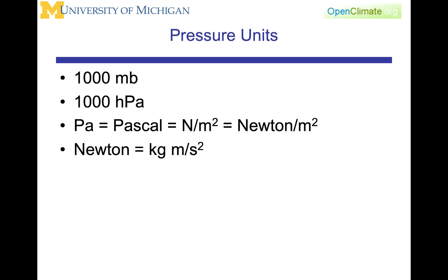Pressure units, again, are millibars. So surface pressure tends to be around 1,000 millibars, which is the same as 1,000 hectopascals. A pascal is a newton per meter squared. And a newton is kilograms meters per second squared. You can see the basic definition of F equals MA in the definition of the newton because there's kilogram mass and accelerations, meters per second squared.